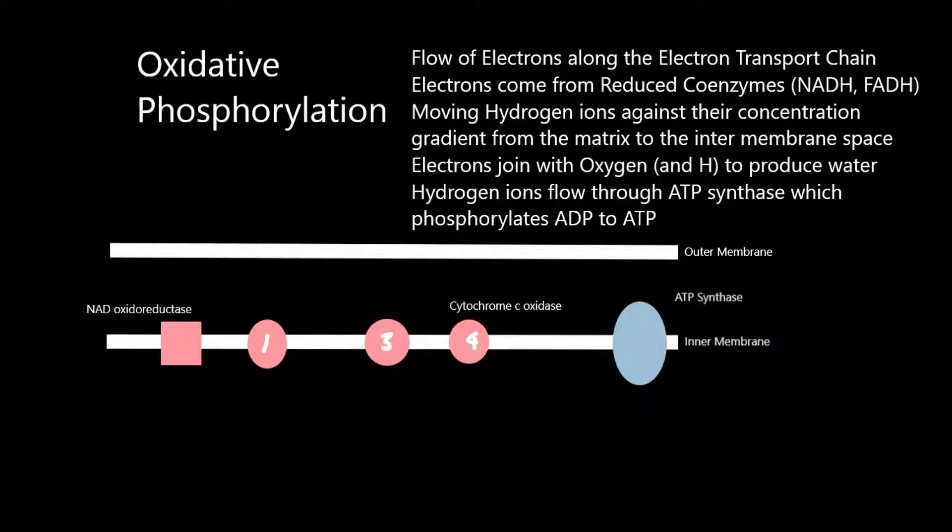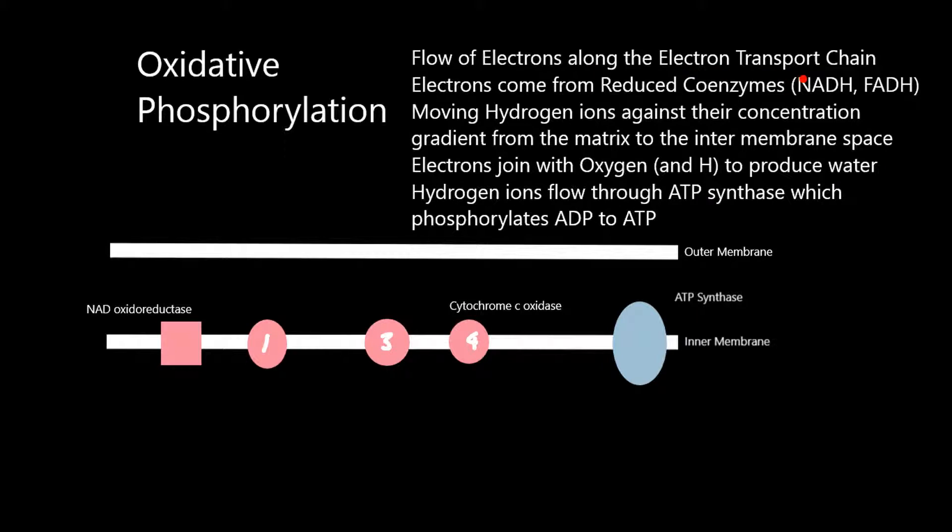Oxidative phosphorylation is the flow of electrons along the electron transport chain. Those electrons come from reduced coenzymes, which are NADH and FADH, and these are produced in glycolysis, the link reaction and the Krebs cycle.